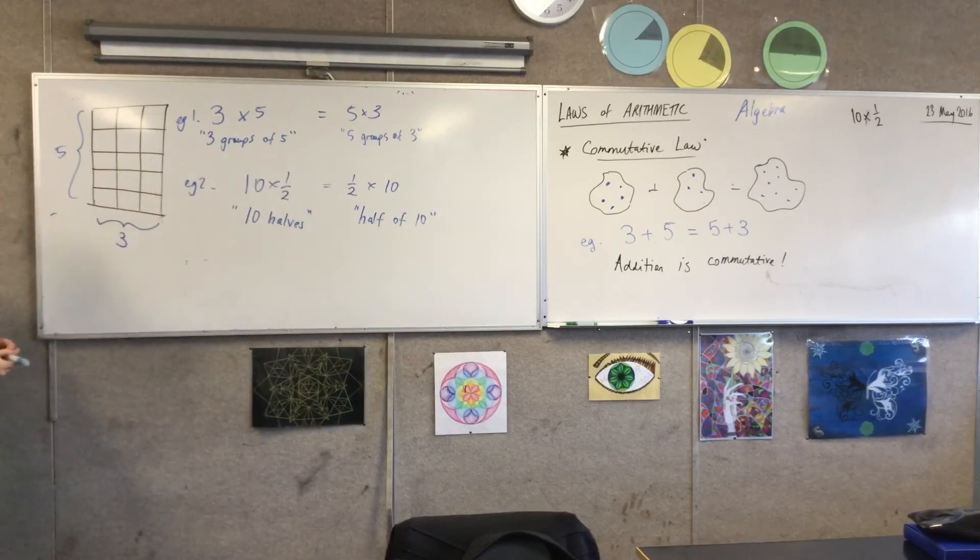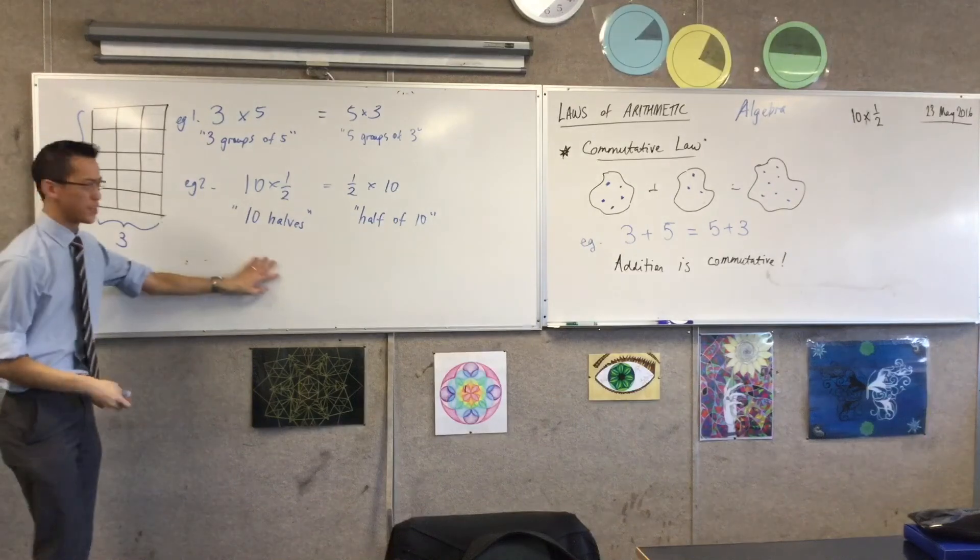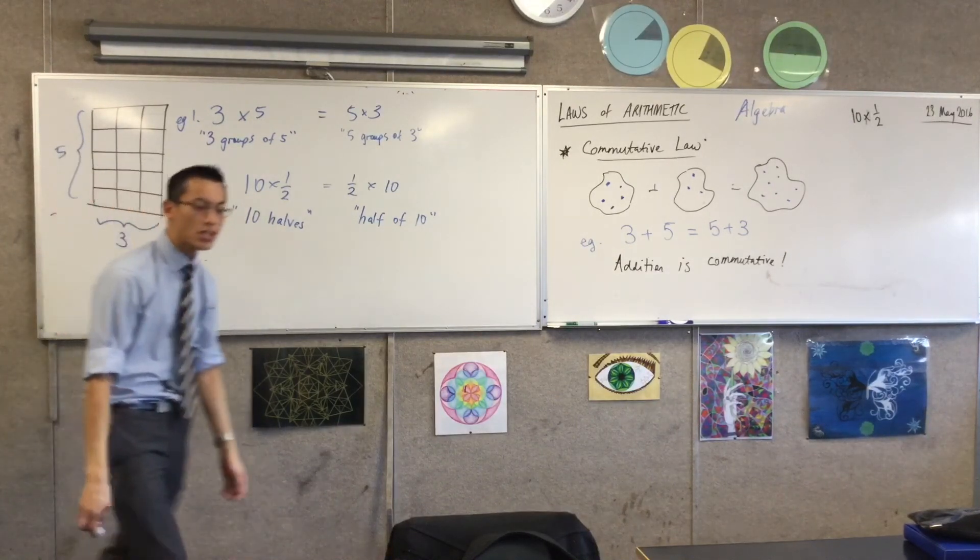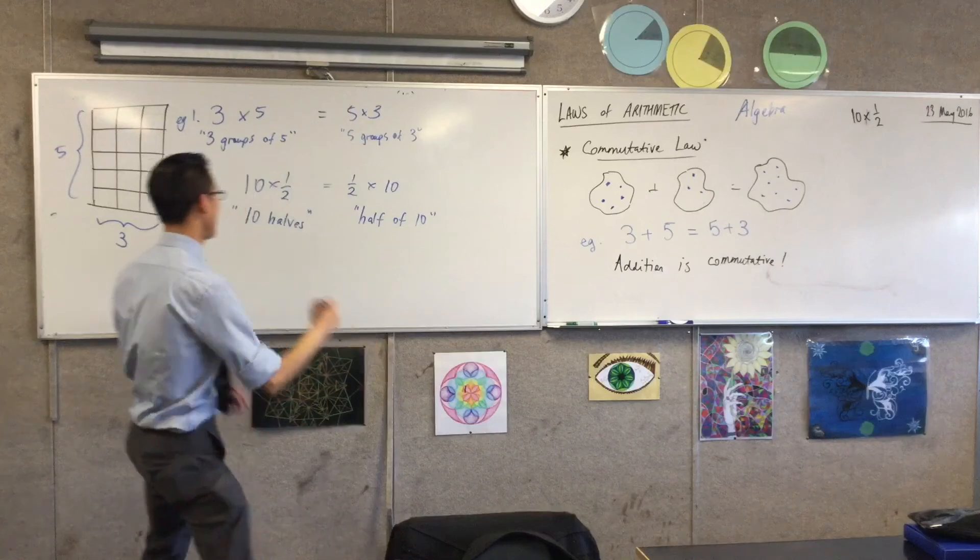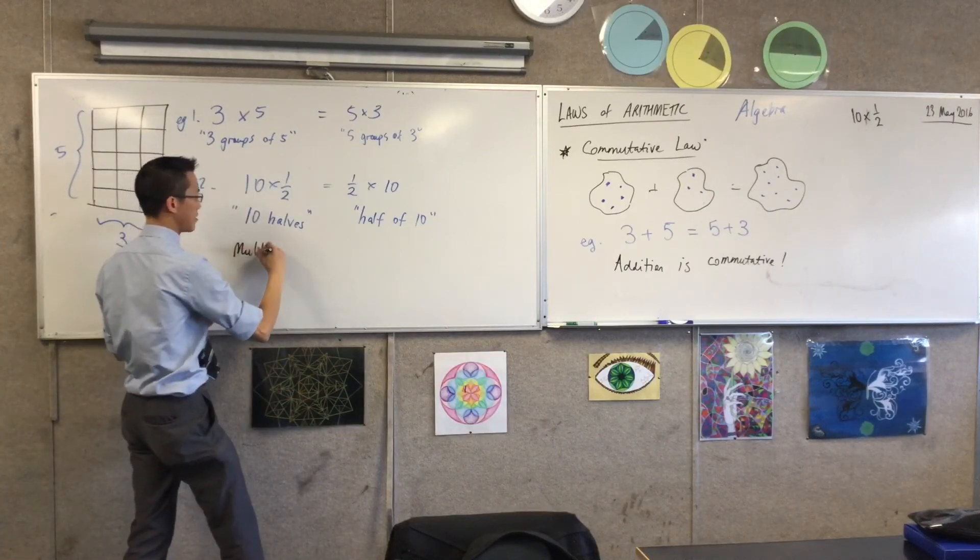So in fact, you could even draw a diagram for this, but it would take us a while because I chose a big number like ten. So again, just like addition, multiplication is commutative.